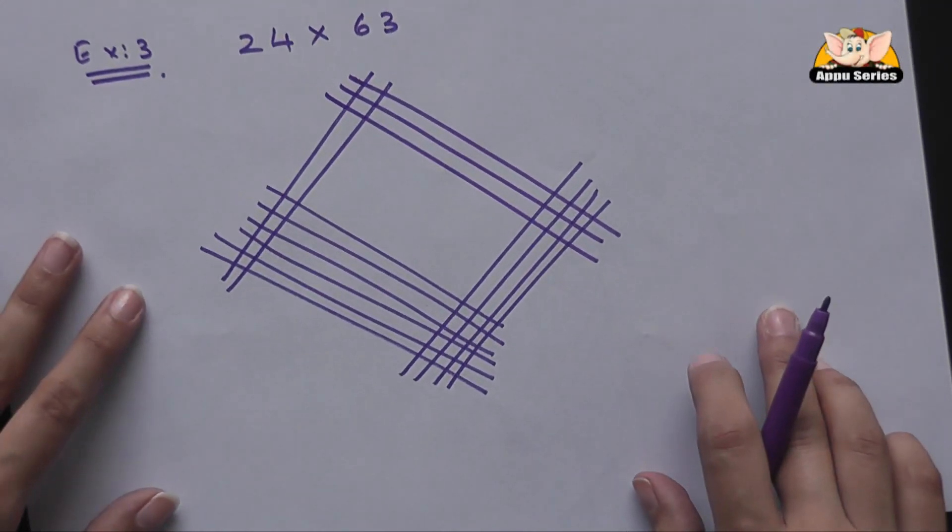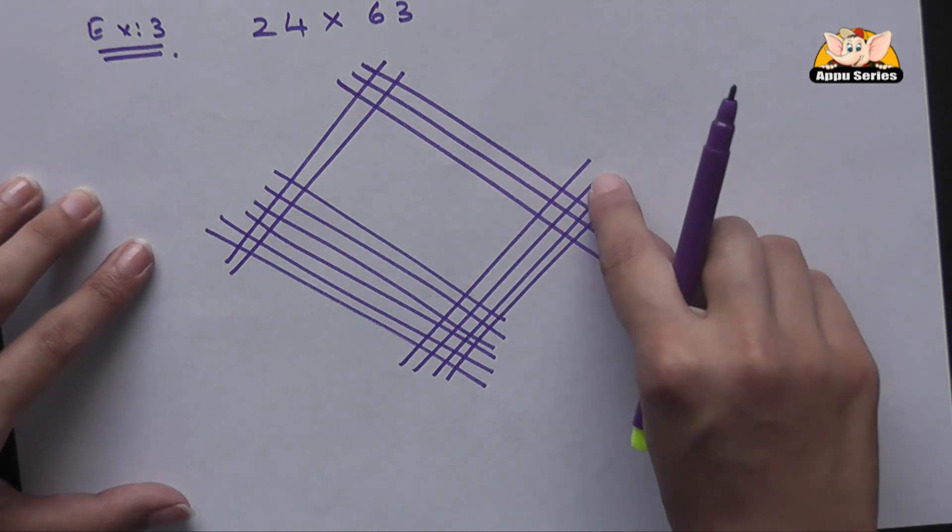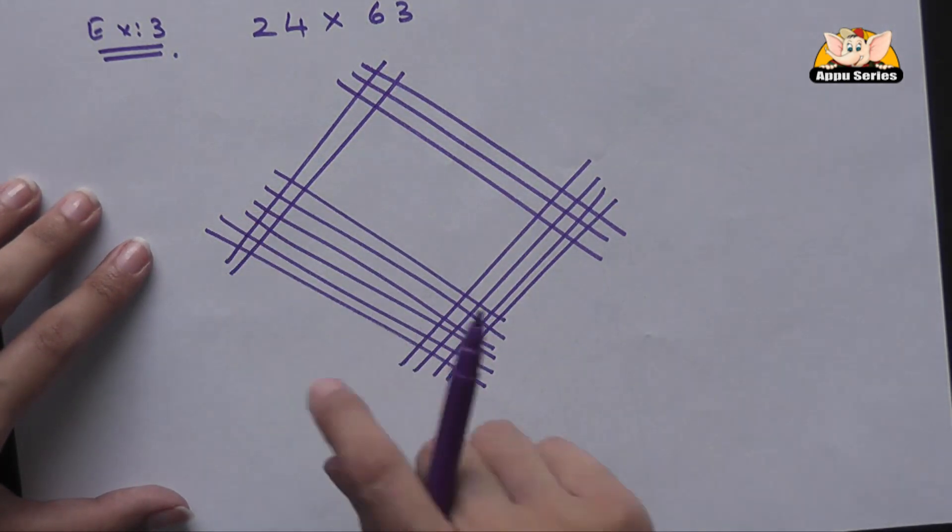Okay, like in our previous video, we're going to count the intersecting points on these lines, then this section, and then this section.